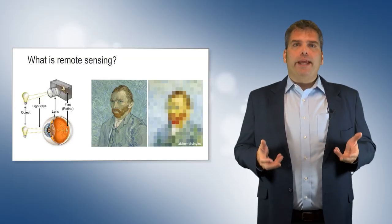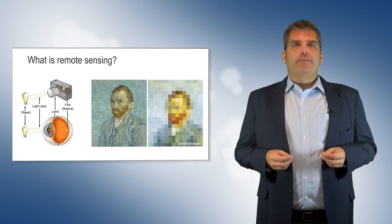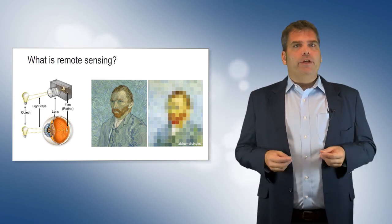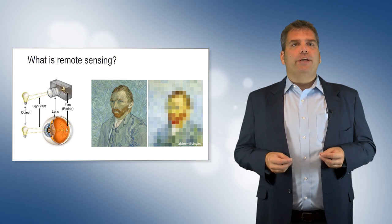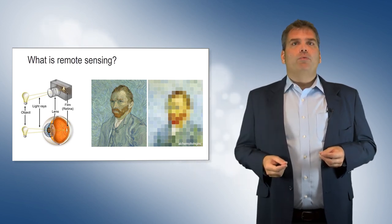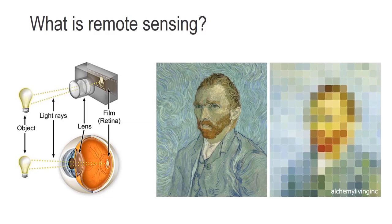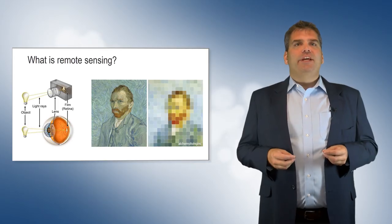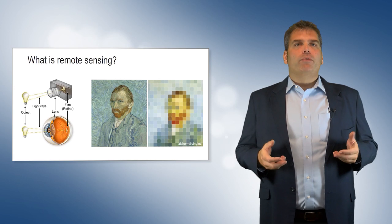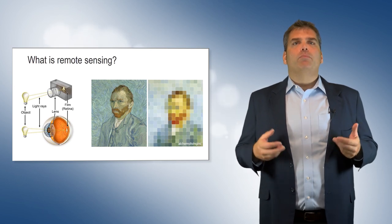Remote sensing is an important category of geospatial data. A remote sensor can be defined as any instrument that collects information without touching it. The human eye, for example, is a remote sensor because it receives light energy from a source without touching it. The digital camera is a more modern remote sensor. A digital camera records light reflected from a surface and stores it as an image. Digital images consist of pixels or grid cells. Light intensity at various frequencies of the electromagnetic spectrum are represented in each pixel by a digital number.